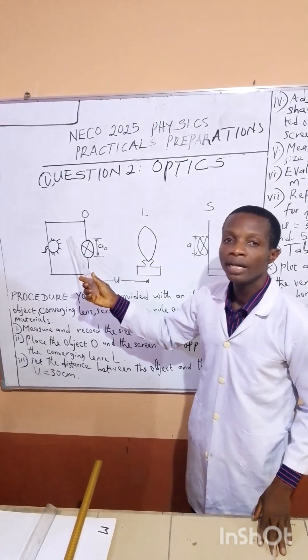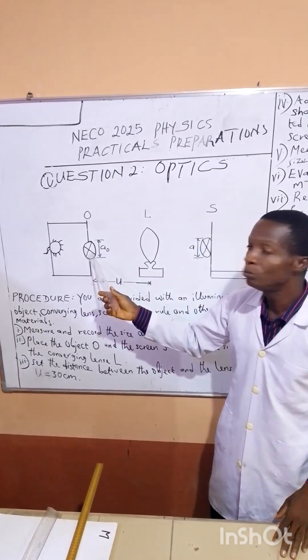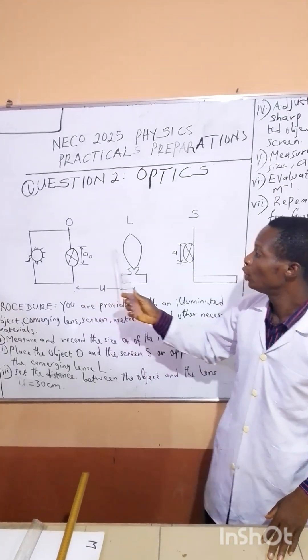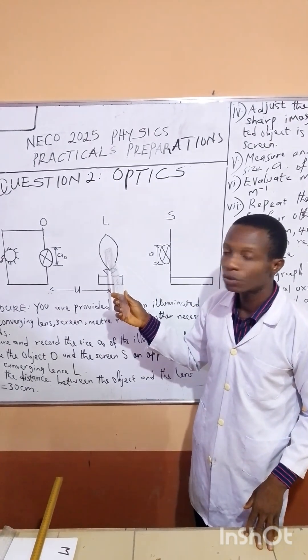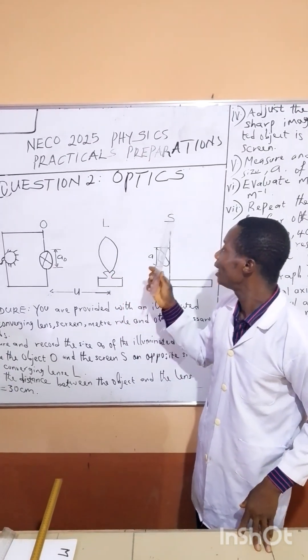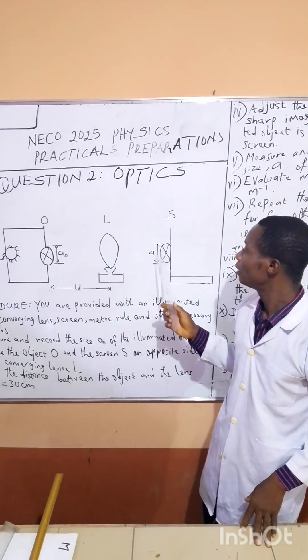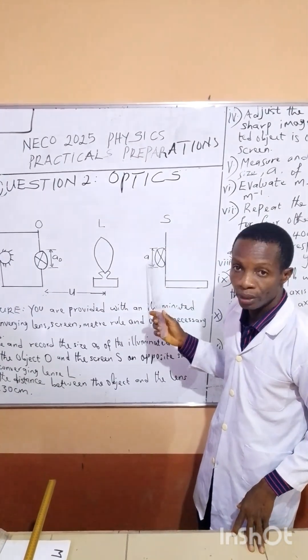We are given a ray box with an illuminated object which will pass through, the illumination will pass through the lens and then it will be shown on the screen.